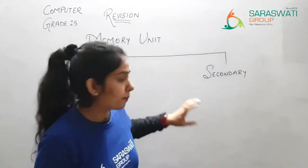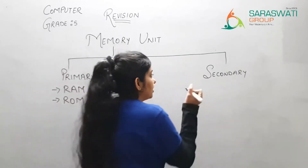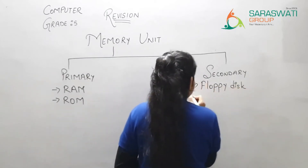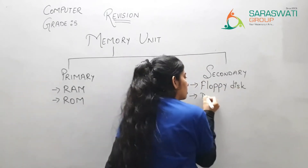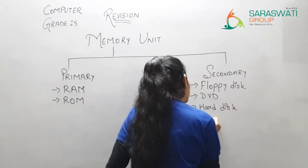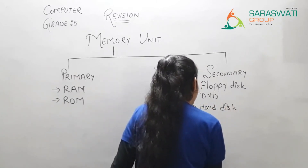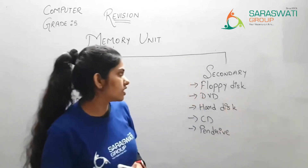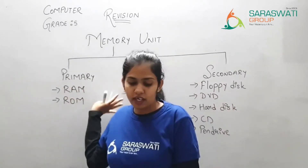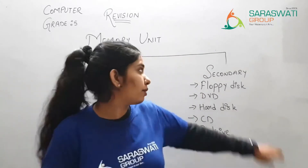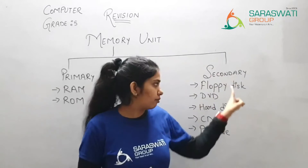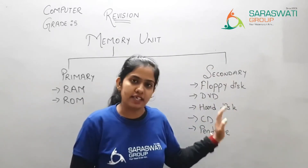Secondary memory is of five types: floppy disk, DVD, hard disk, CD, and pen drive. Secondary memory is also known as auxiliary memory or external memory, because it is outside the computer. It is indirectly connected to the computer, so sometimes processing becomes slower compared to primary memory, which is directly connected and therefore faster.